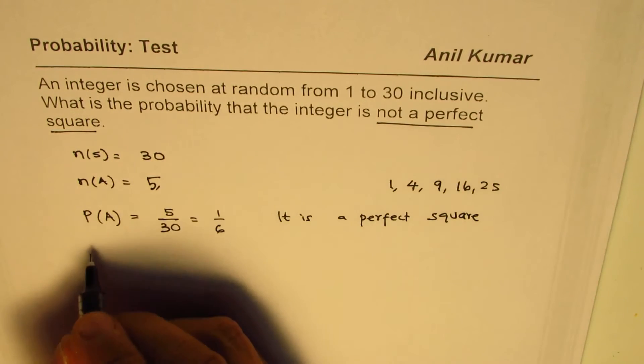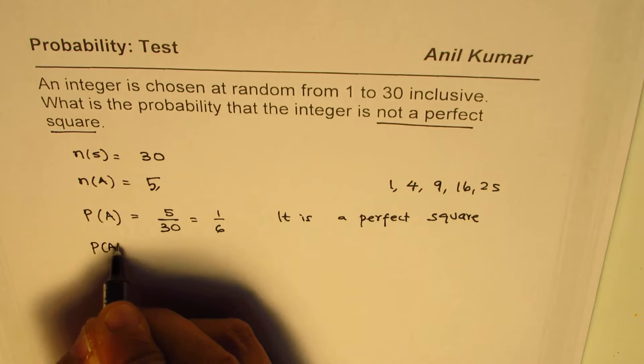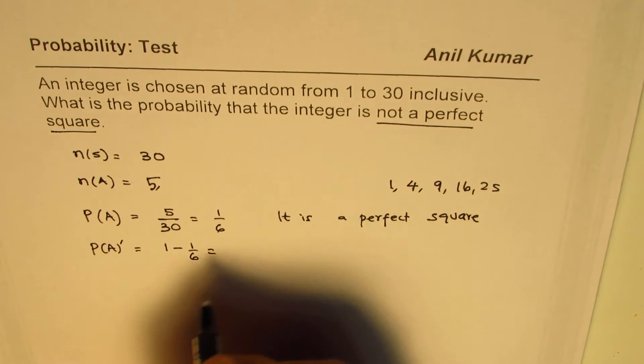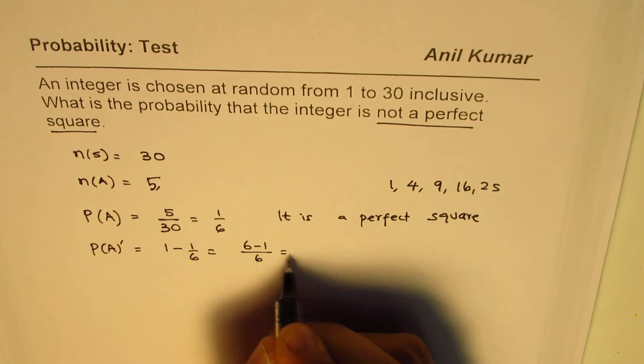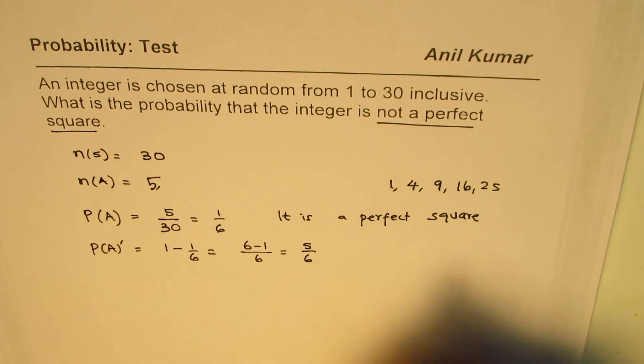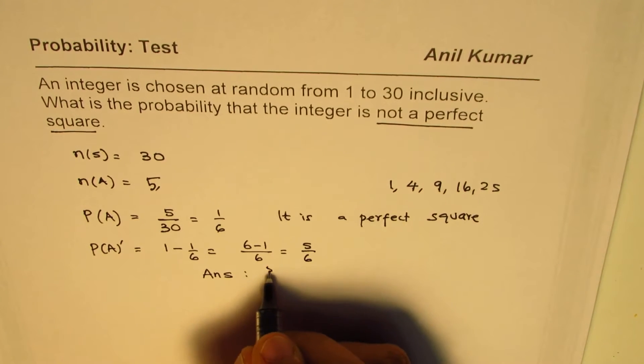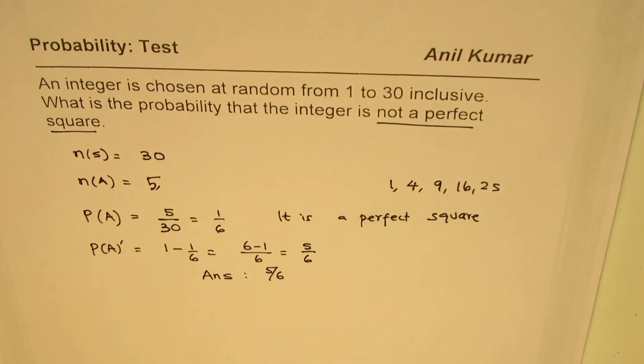We need not a perfect square, so we need the complement of this. That should be 1 minus 1 over 6, that is 6 minus 1 over 6, or 5 over 6. So our answer is the probability is 5 over 6 for the number not being a perfect square.